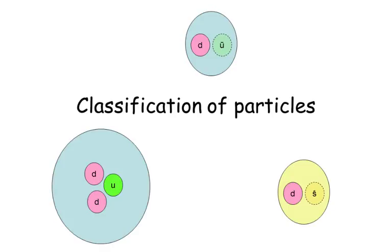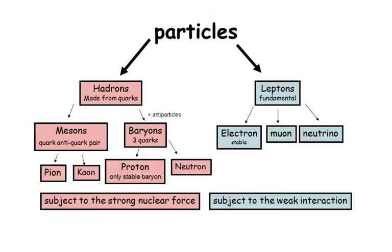Hi guys, today I'm going to go through the classification of particles. Now all particles can be split up into two different groups: hadrons, which are made of quarks, and leptons, that are fundamental.